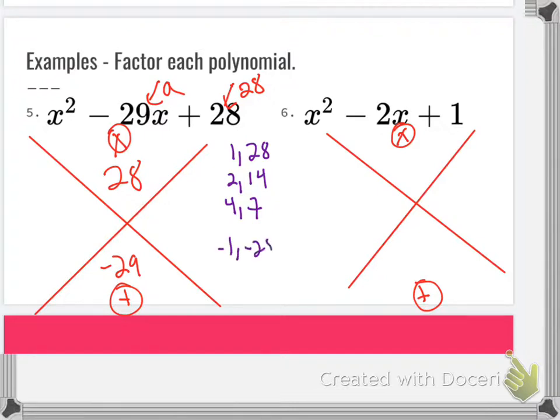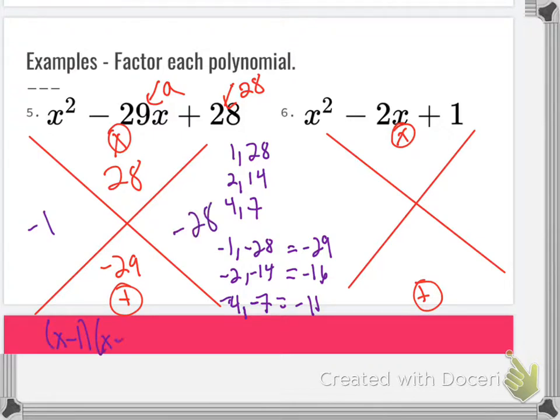Negative 1, negative 28. Negative 2, negative 14. Negative 4, negative 7. This gives me a negative 11. Negative 16. Negative 29. So the ones I'm interested in is negative 1, negative 28. And that's our answer.